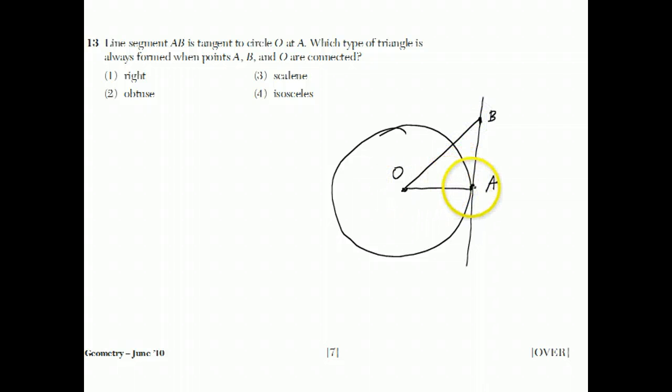If I connect these three points, they want to know what kind of triangle is this. Well, there is a rule that if you have a tangent line to a circle, the angle formed by the radius to that tangent point, to the points of tangency, and the line itself always forms a right angle. It's a nice rule from geometry, which is why the answer is choice one. It has to be a right triangle. It says it's always formed. You might look at this and say, well, this is also a scalene triangle. And it might be, but it doesn't have to be. But it does have to be a right triangle.